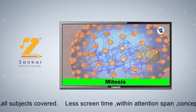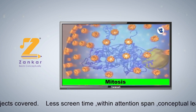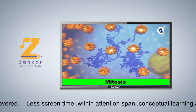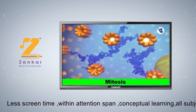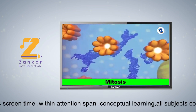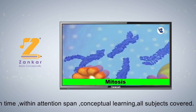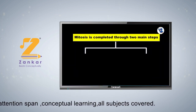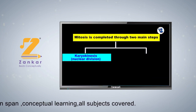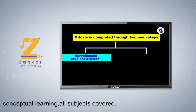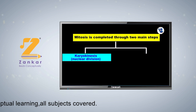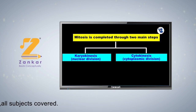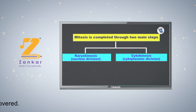Somatic cells and stem cells divide by mitosis, and mitosis is completed through two main steps: first is karyokinesis, that is nuclear division, and secondly cytokinesis, that is cytoplasmic division.